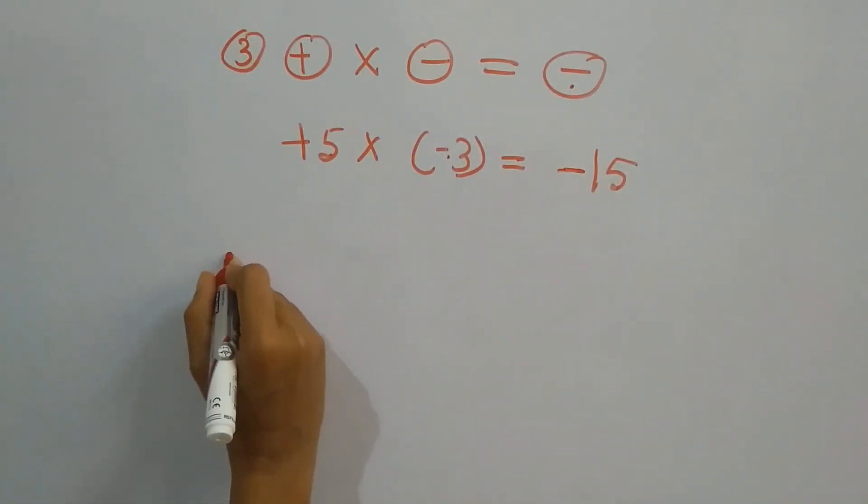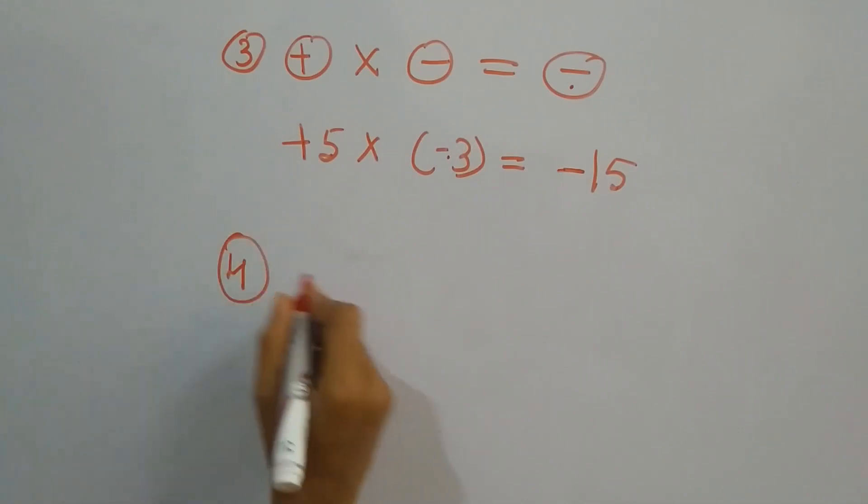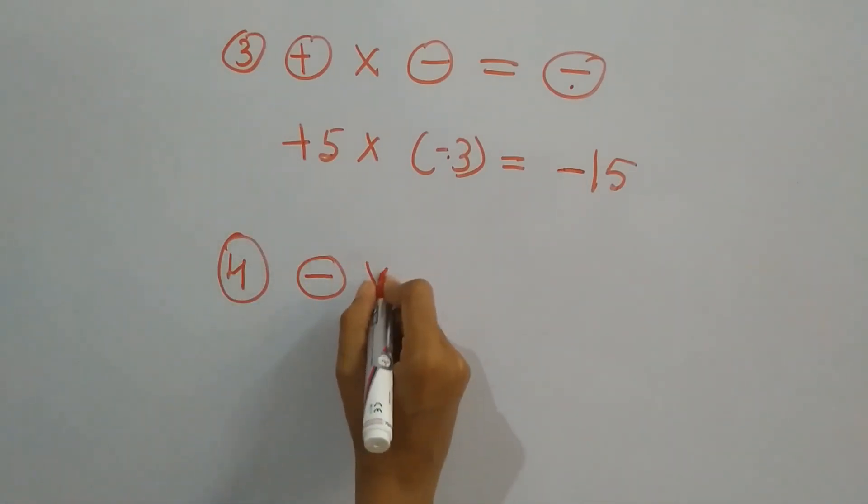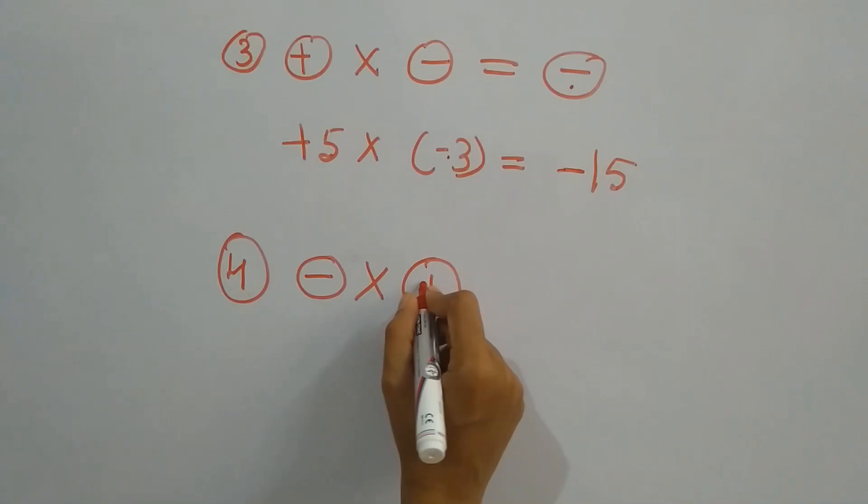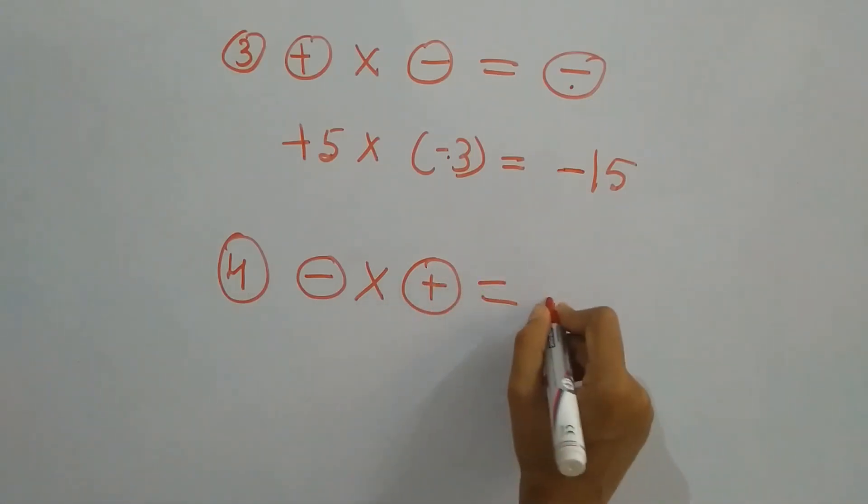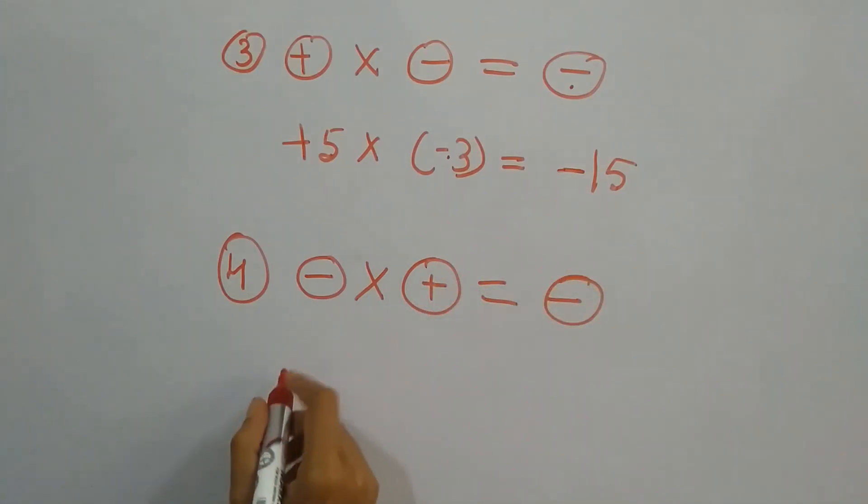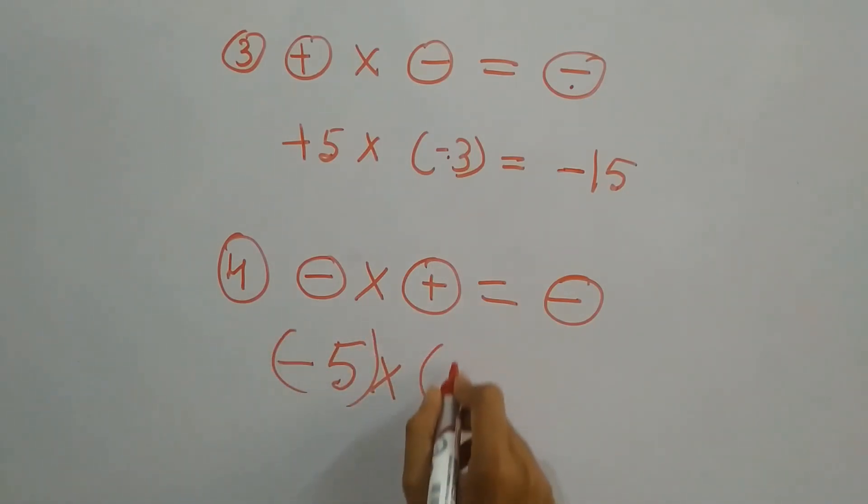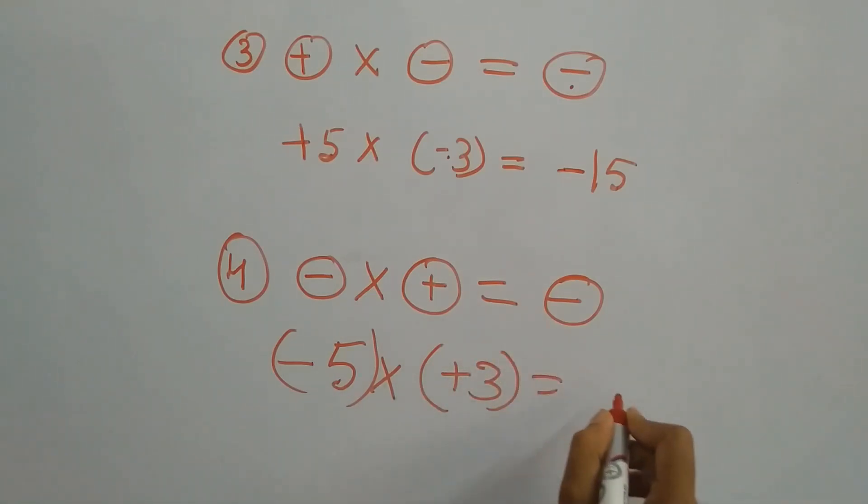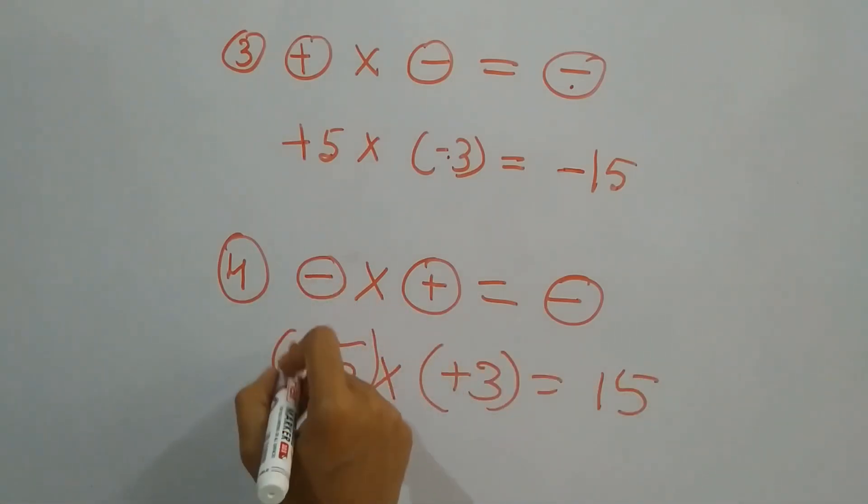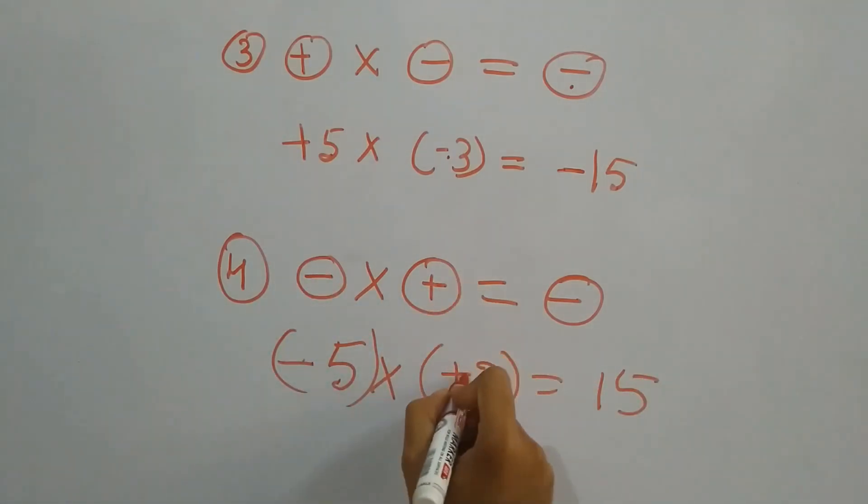In the last case, minus into plus, that equals minus. For example, minus 5 into plus 3 is equal to 15. Again here, minus plus—the result is negative. Thank you.